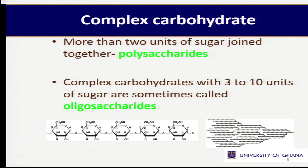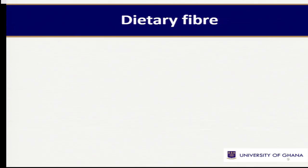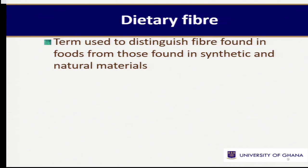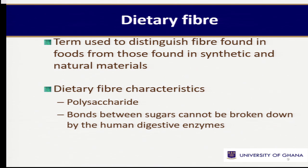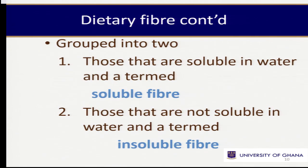And for some tests, you come across oligosaccharides — it is also part of the polysaccharides, but some tests separate them, which are three to ten units of sugar units. And then dietary fiber — we use the word 'dietary' to differentiate it from the fiber that we use for our materials. Dietary fiber is very, very important. You may notice that dietary fiber has been added to the polysaccharide group in some texts, but what you should notice is that dietary fiber is not available to the human body because we cannot break the bonds that it has.